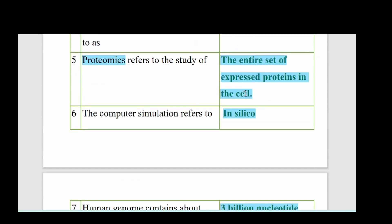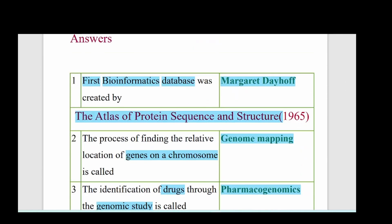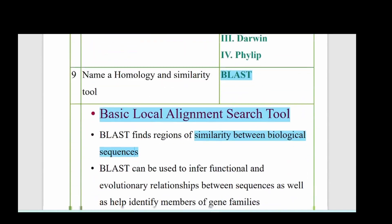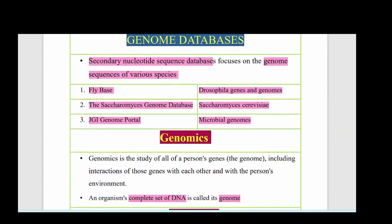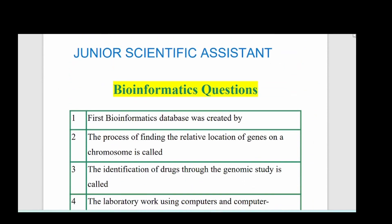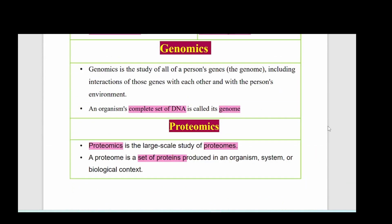Proteomics refers to the study of the entire set of expressed proteins in the cell. Finding the location of genes on a chromosome is called genome mapping. Pharmacogenomics is the identification of drugs through genomic study. In this class we covered primary databases, secondary databases, protein databases, and nucleic acid databases with full forms and examples.